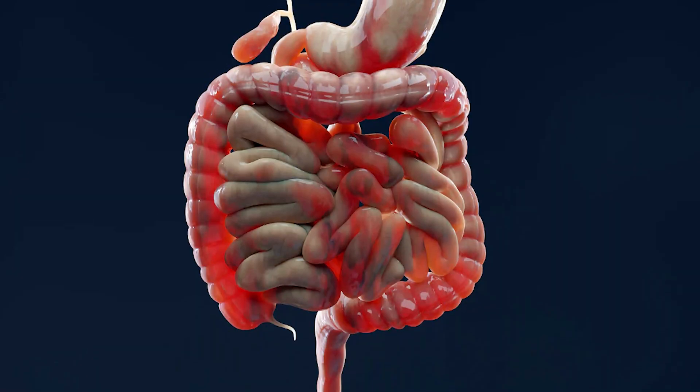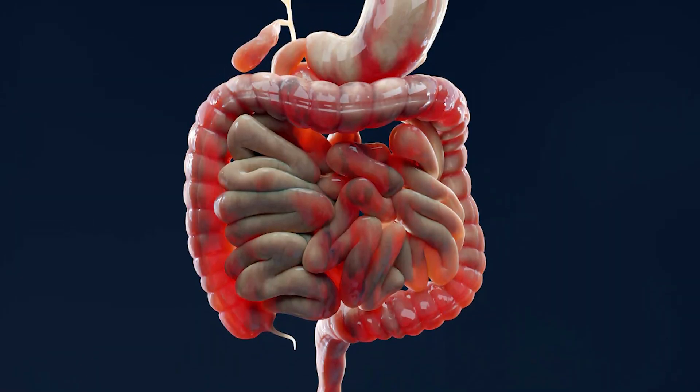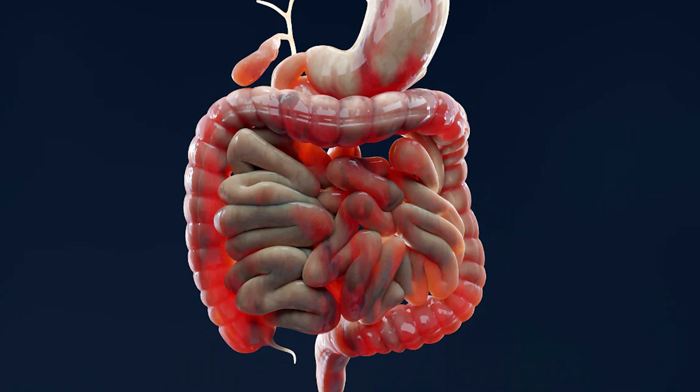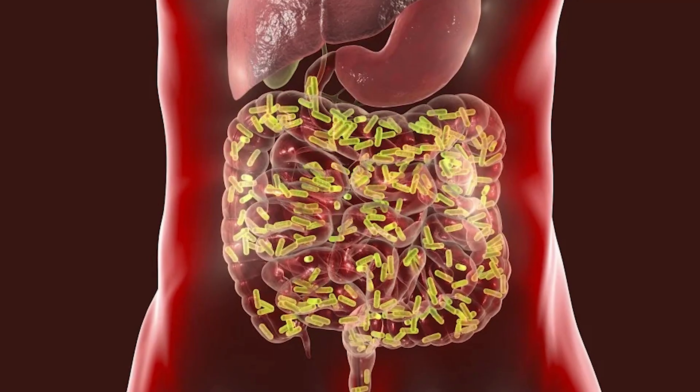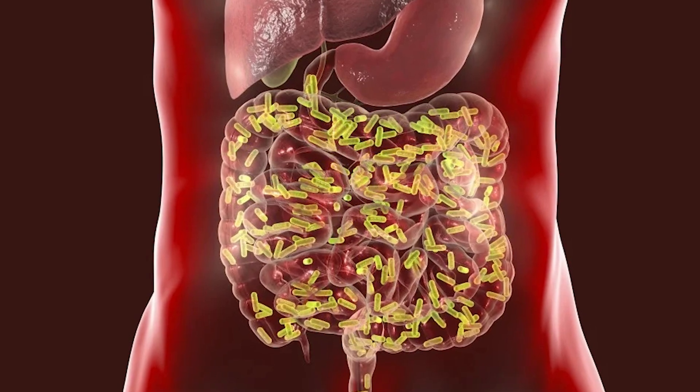The next area that is a huge trigger for mast cell is the digestive tract — either immune, neurological, microbiome, or all of the above imbalance. And what's interesting is that even with no gut symptoms, no digestive symptoms, you can have the microbiome thrown off or the GI immune system thrown off, or the GI nervous system — or all three. That then increases the amount of mast cell sensitization through a whole network of things.